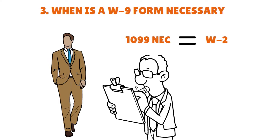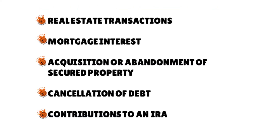Form W-9 is also used to report real estate transactions, mortgage interest, acquisition or abandonment of secured property, cancellation of debt, and contribution to an IRA. The employer must include the appropriate taxpayer identification number on each payment to the non-employee, and the total of all payments for the year must be included on the Form 1099-NEC provided to the worker and to the IRS.